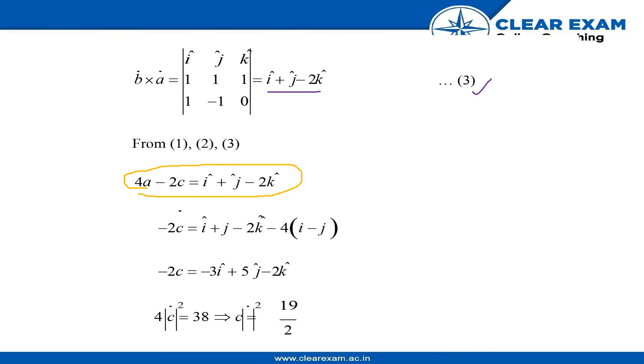Simplifying it further, we get 4c squared equals 38, which gives us—it is a misprint over here—c squared magnitude equal to 19 by 2. I hope everybody got the solution.